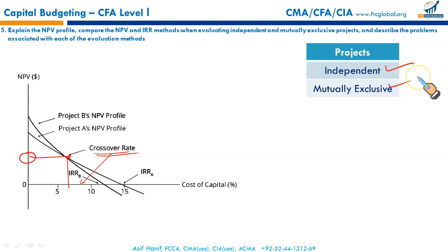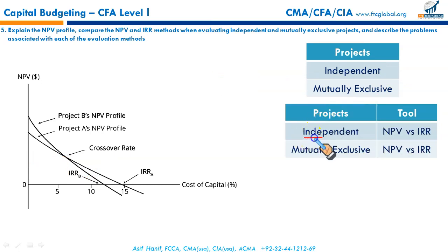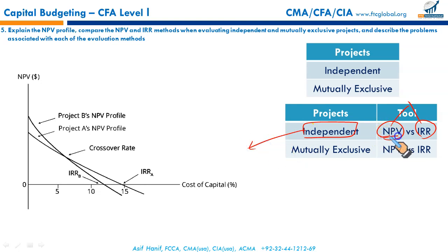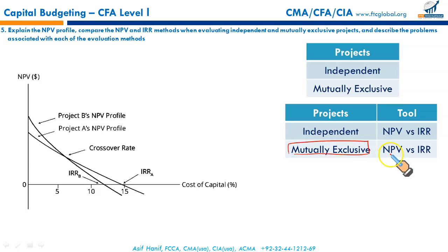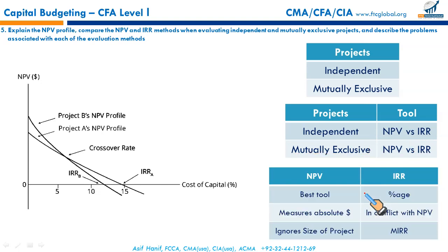Independent projects — those that can be taken simultaneously with no capital constraints — give the same accept-reject decision whether you use NPV or IRR. But for mutually exclusive projects, IRR and NPV may give conflicting conclusions. Whenever NPV and IRR are in conflict, always choose NPV. NPV is the most sophisticated method and the best tool. It measures the absolute increase in shareholder wealth in dollar amounts.